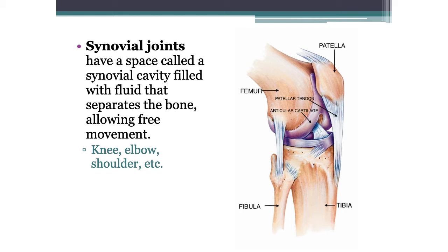Looking at the knee, we see the tibia, fibula, and femur. We see the patella tendon, cartilage, and the ligaments. The ACL is the one in the front — ligament connects bone to bone. You have the ACL, MCL, PCL, and LCL, all ligaments connecting bone together. Tendons connect bone to muscle.